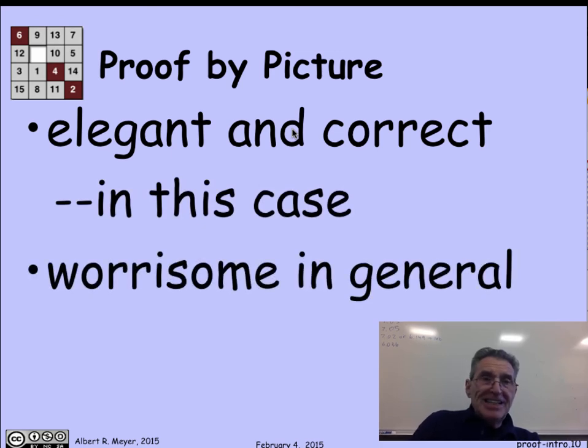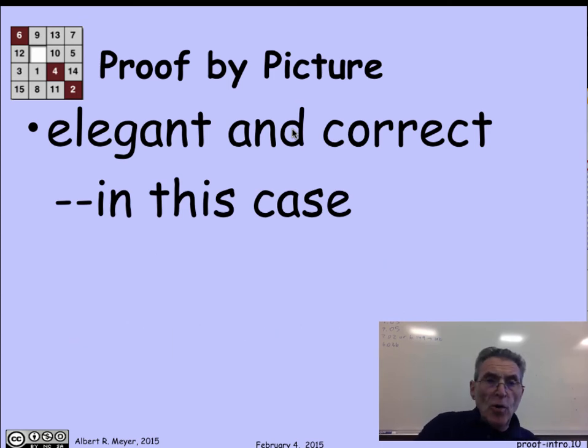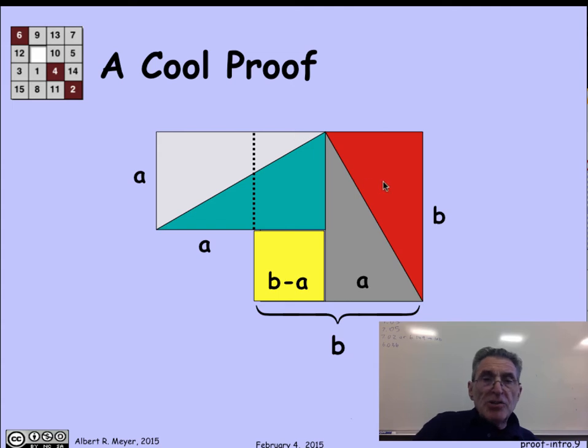But unfortunately, proof by pictures worry mathematicians, and they're legitimately worrisome, because there's lots of hidden assumptions. An exercise you can go through is to go back and think about all of the geometric information that's being taken for granted in this picture. Like over here, how did we know that that was a right angle, that this thing was a rectangle? We needed that to be a right angle because we were claiming that this was a square. How did we know that that was a rectangle?